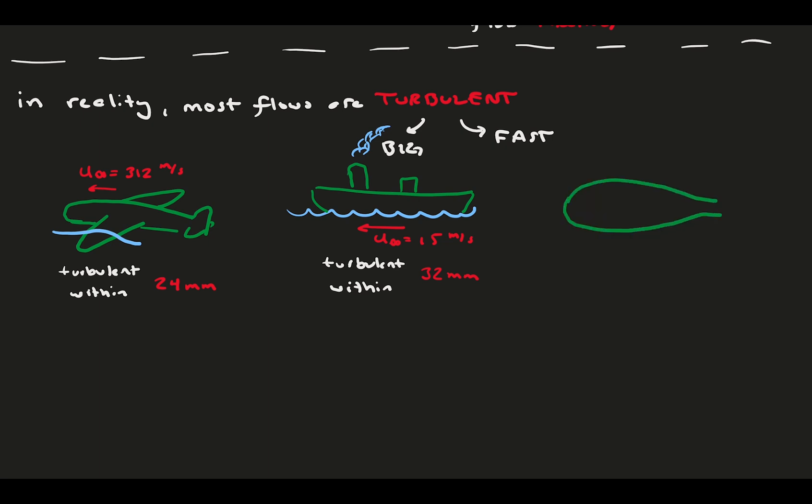Ship flows are slower, but represent some of the biggest human-made flows on the planet. Within 32 millimeters of seeing the ship hull, flow becomes turbulent. Even much smaller swimmers like fish are mostly turbulent. A tuna, at a typical swimming velocity, is turbulent within 50 millimeters from the nose, representing turbulence over the majority of the body.